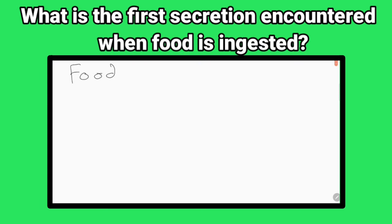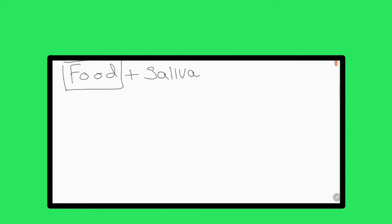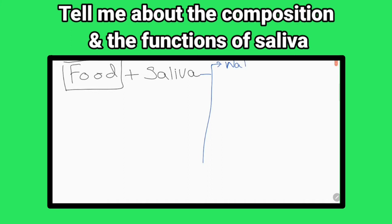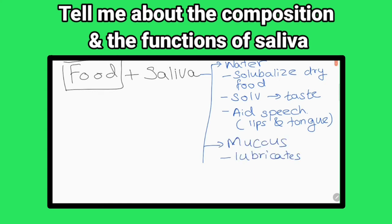What is the first secretion encountered when food is ingested? Saliva. What can you say about the tonicity of saliva? Hypotonic. Tell me about the composition and functions of saliva. Saliva keeps the mouth moist and facilitates swallowing. Water in saliva solubilizes dry food, serves as a solvent for molecules that stimulate taste buds, and aids in speech by facilitating movements of lips and tongue. Mucus lubricates and binds masticated food particles, forming a slippery food bolus.